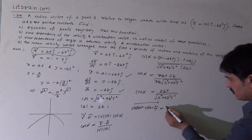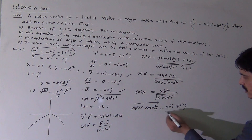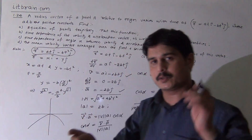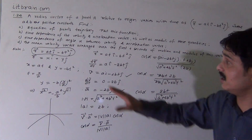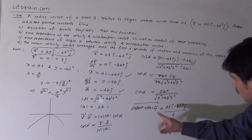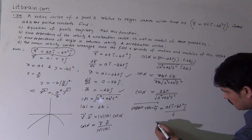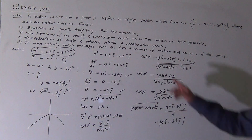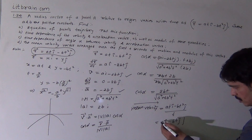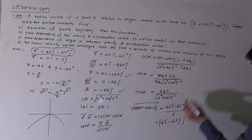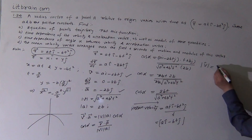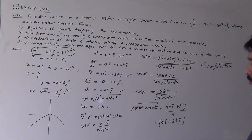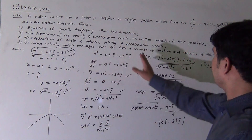So the mean velocity vector equals (at·î - bt²·ĵ) / t, which simplifies to a·î - bt·ĵ. This is the mean velocity vector averaged over t seconds. Taking its modulus gives |v_avg| = √(a² + b²t²). This is the numerical value of the mean velocity averaged over the first t seconds.